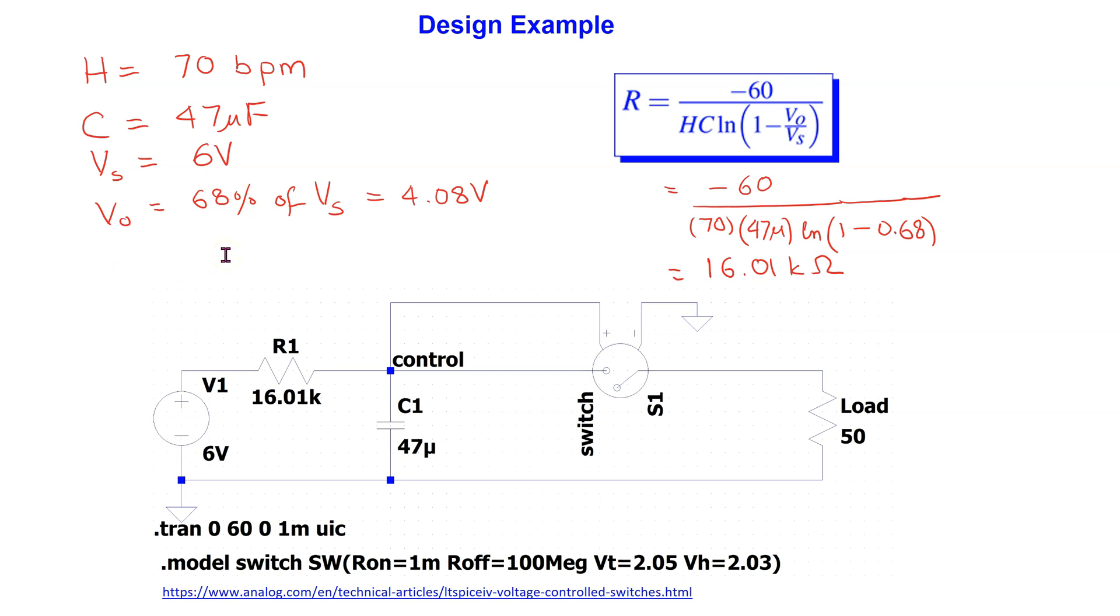The value of V0 depends upon the controller. In our case, any value between 60 to 75 percent can be typical. Using these values we can work out the resistor value as shown here. The LTSpice implementation is shown here.